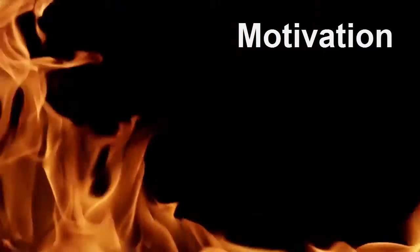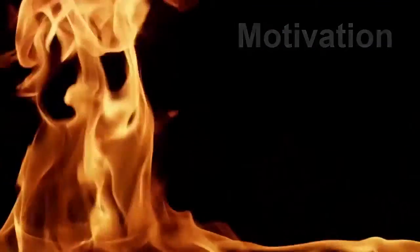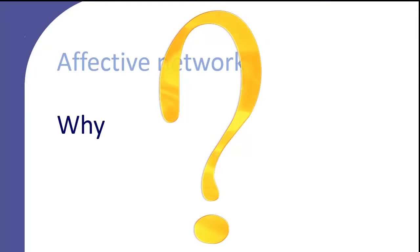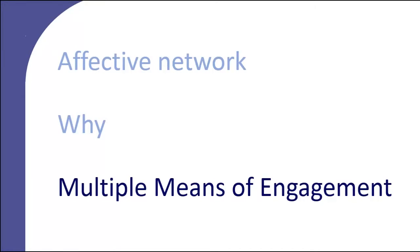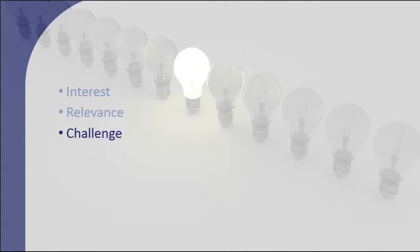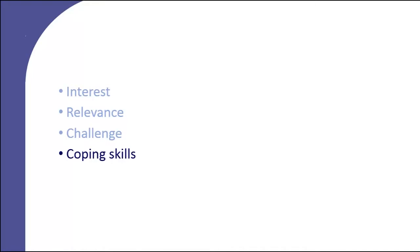The brain network that regulates how we engage in learning and how we stay motivated is the affective network. To engage the affective network, the learner should answer the big why question and also the what's in it for me question. To help learners with the answers, we should provide them with multiple means of engagement. Motivationally speaking, our learners might arrive with different interests, different understanding of how the presented material is relevant to their lives, different understanding of what is easy and what is difficult, or different ways to cope with the learning process. Our job is then to meet them where they are and either start the fire of motivation or help them keep it burning.